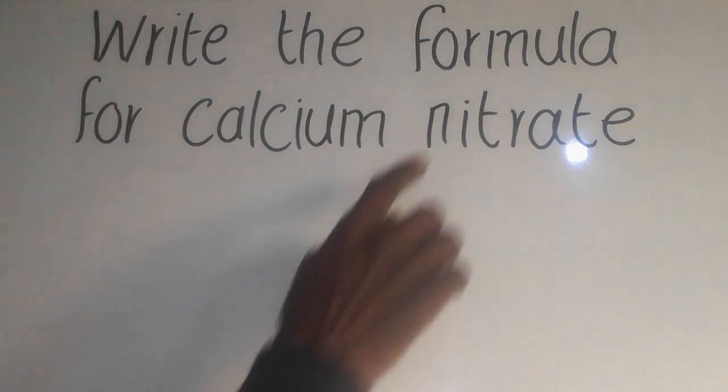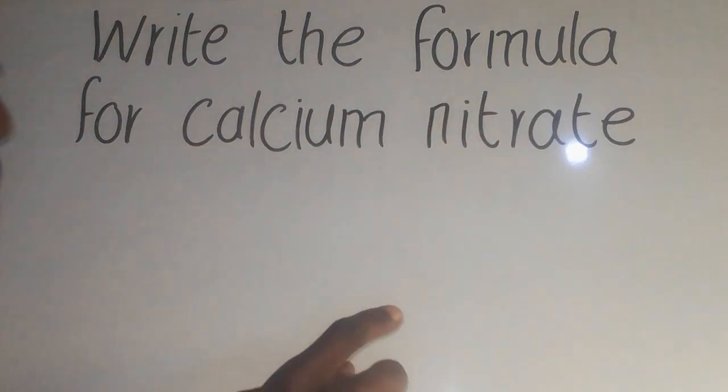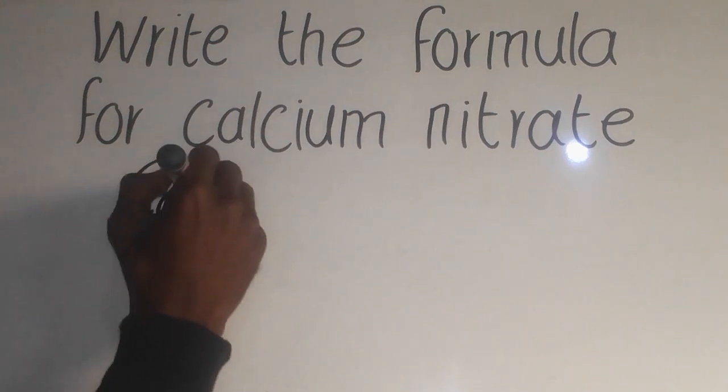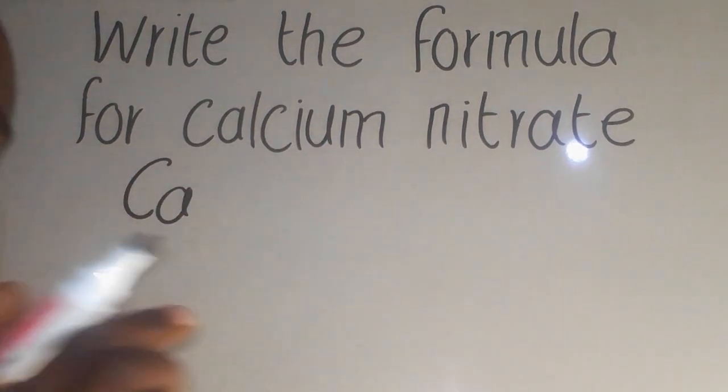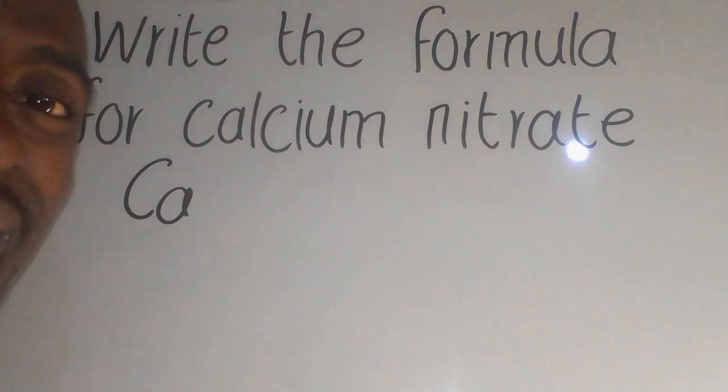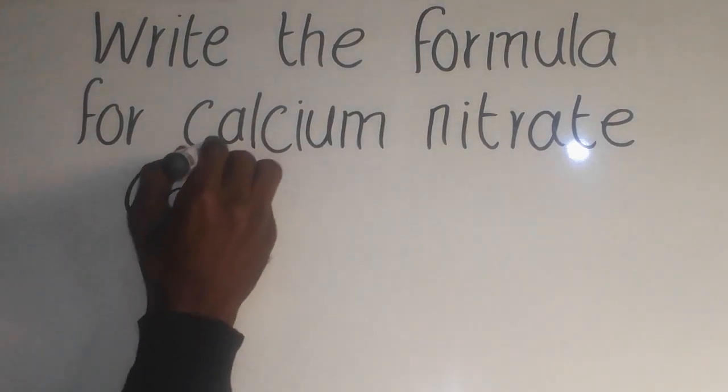Now, the question is talking about what is the formula there. Calcium, we know it is represented by Ca. This calcium is found in group 2, meaning there's a valency of 2 there.